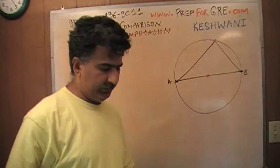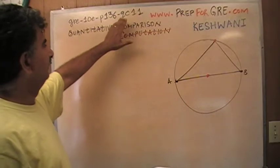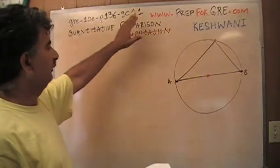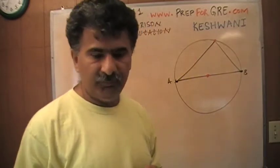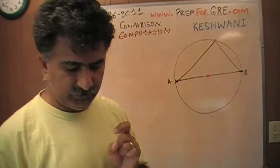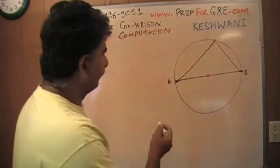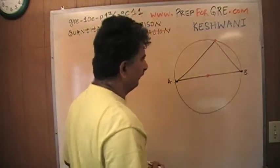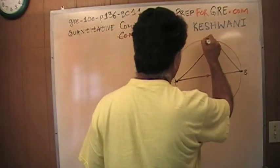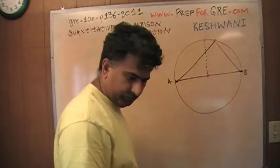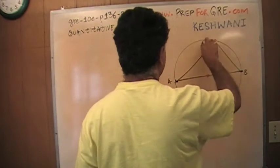The problem I'm going to solve is found on page 136, question number 11. QC stands for quantitative comparison, number 11. Let's take a look at it. Before I actually solve this problem, let me do something different for a second — I want you to take a look at this picture. There's a circle here, and inside the circle we have a triangle, and this is the center of the circle.